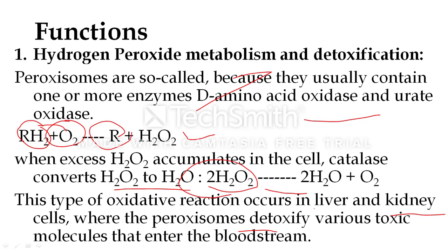This oxidative and detoxification reaction occurs prominently in liver and kidney cells, where peroxisomes detoxify various toxic molecules. The detoxified molecules then enter the bloodstream.